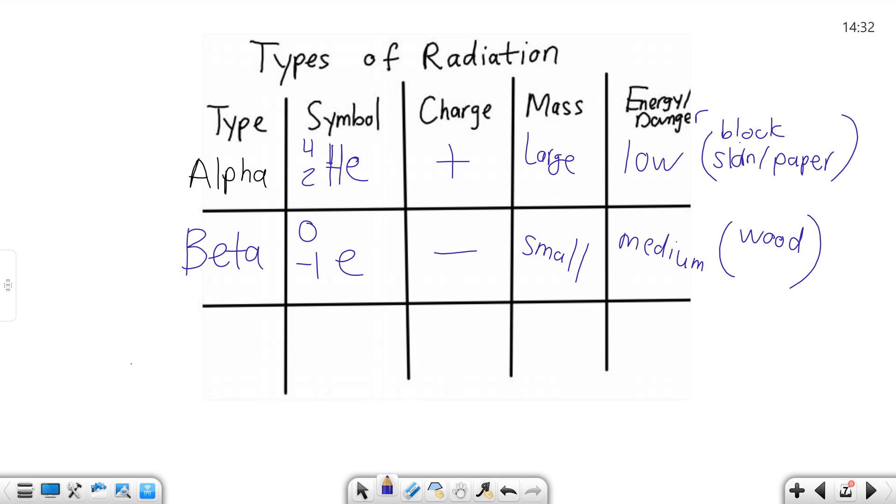The last one is gamma. This one has a funky looking symbol where it's 0, 0, and then a goofy looking, I just call it a y, like a funky looking y. So that's gamma. It has zero charge because you can see it has no particles in it, there's no protons, neutrons, negative proton things. It is actually pure energy, so it has no mass.